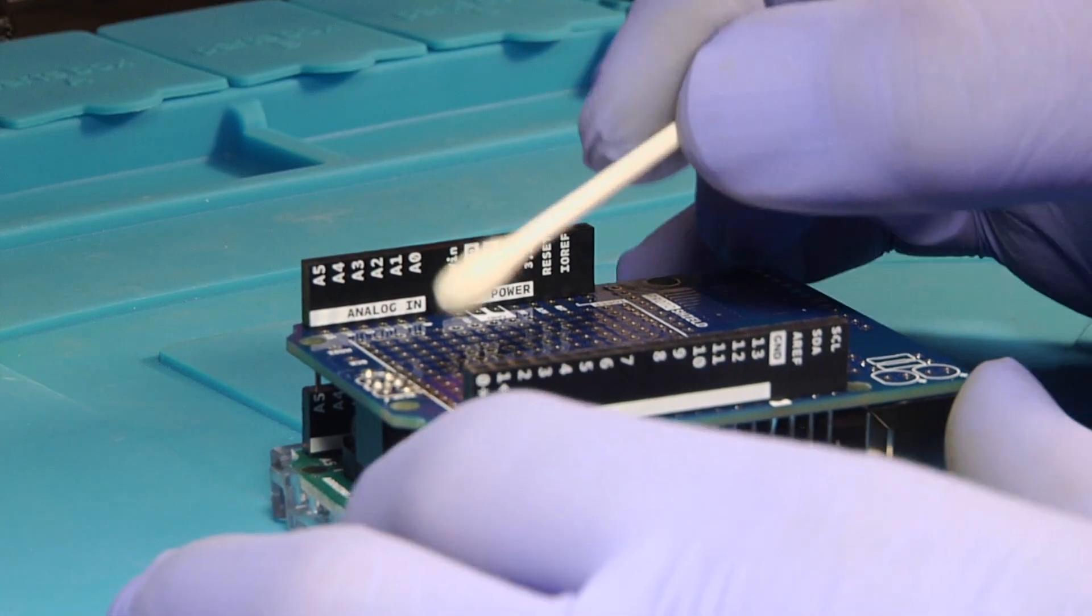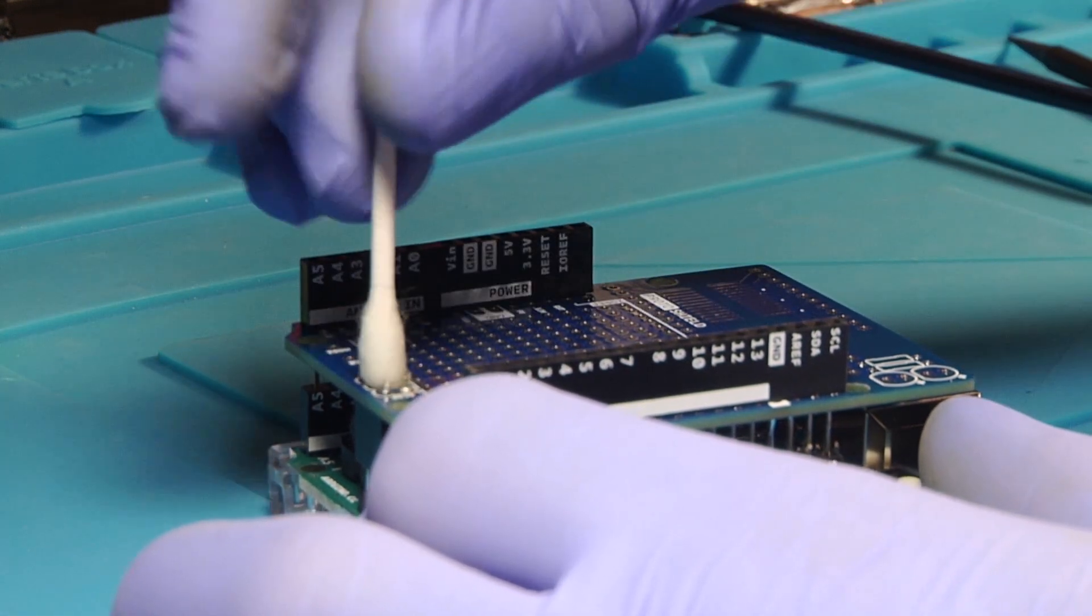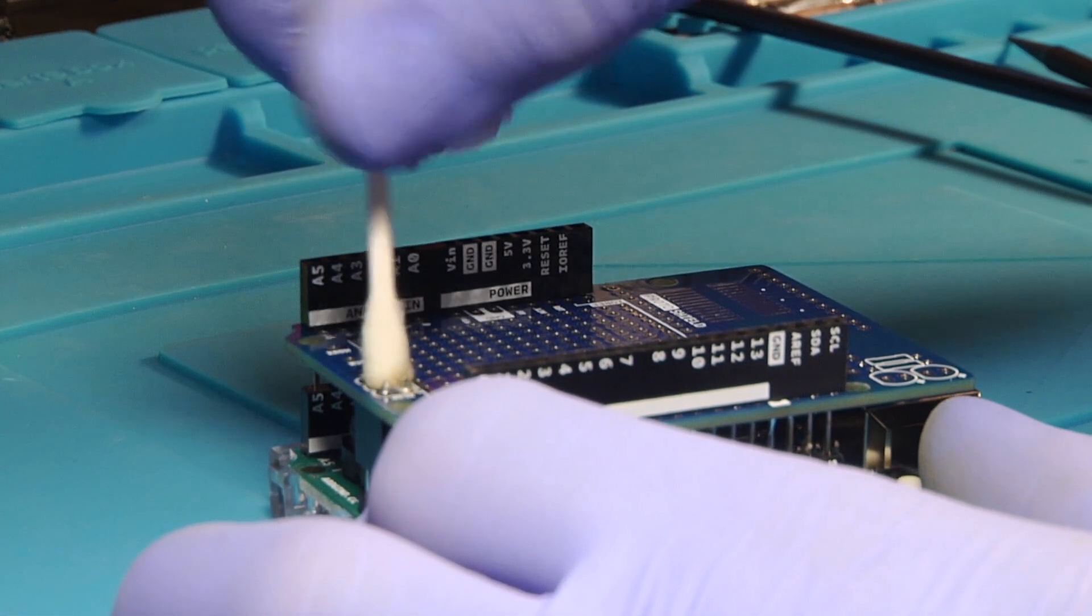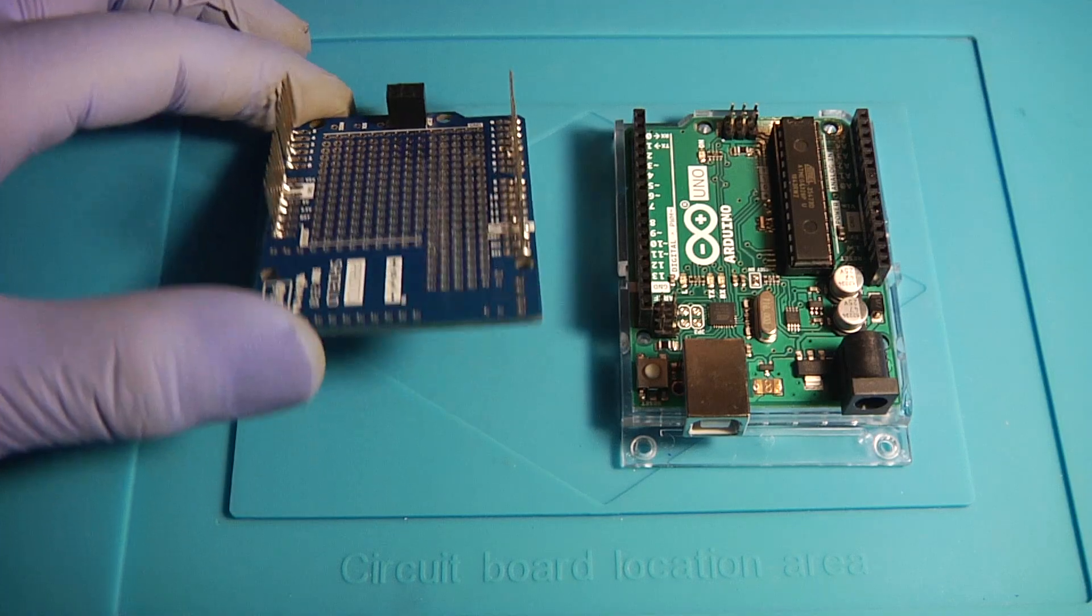Now I use a q-tip with some 91% isopropyl alcohol to clean up the board. Everything is soldered in place now. Not a bad job for a newbie.